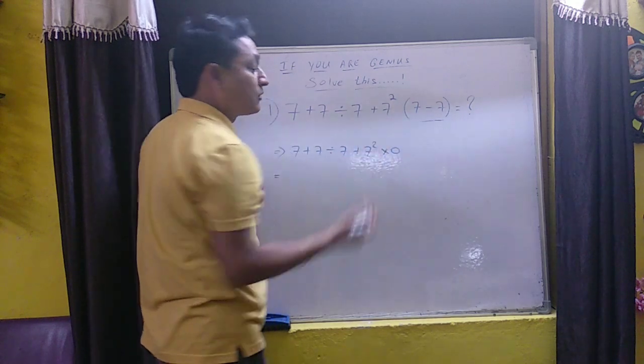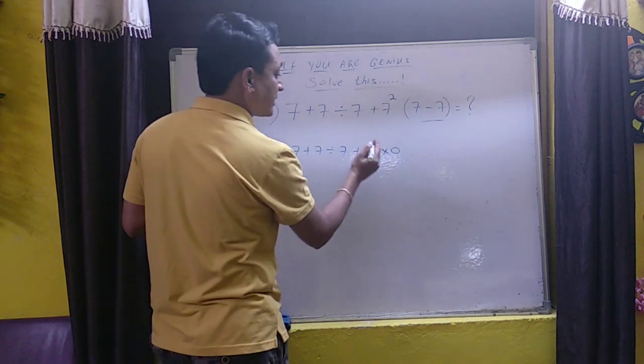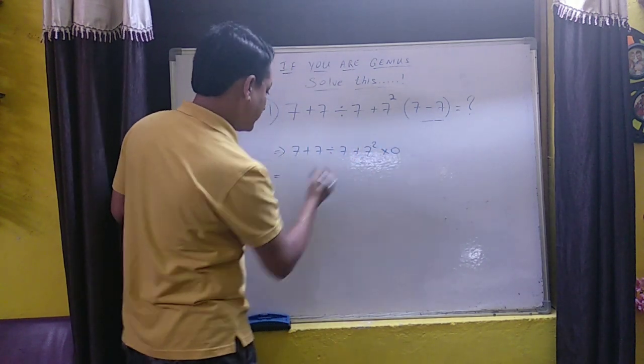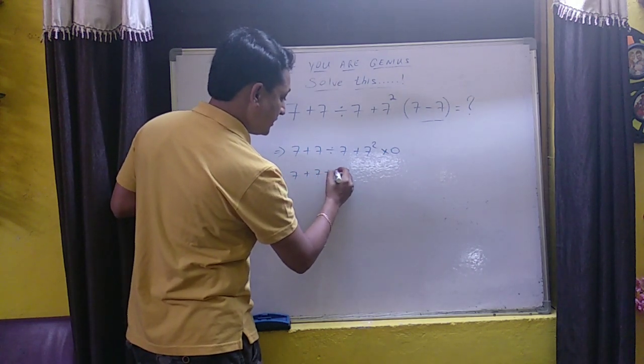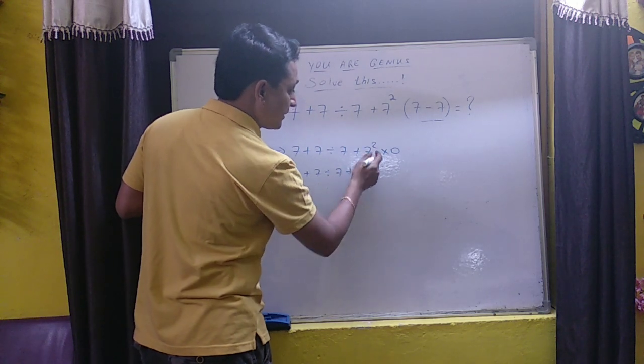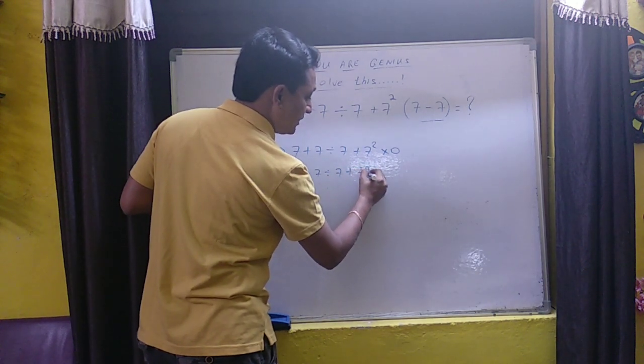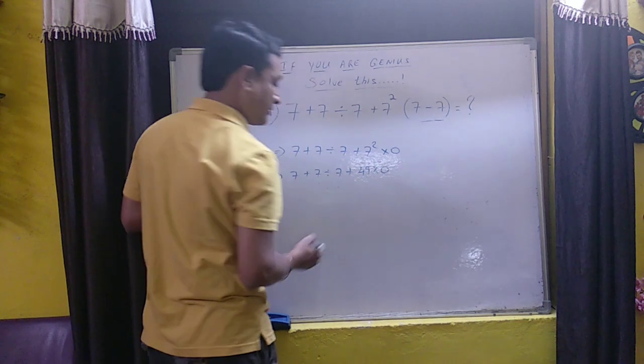Removing of bracket is over. Now we are going to go for order. That is exponential. Yeah, this one. 7 plus 7 divided by 7 plus 49 into 0. Right?